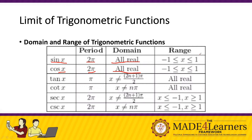The range will depend on the amplitude. In this case, the amplitude is 1, so the minimum and the maximum values for the range are negative 1 and positive 1 — or from negative 1 to positive 1.